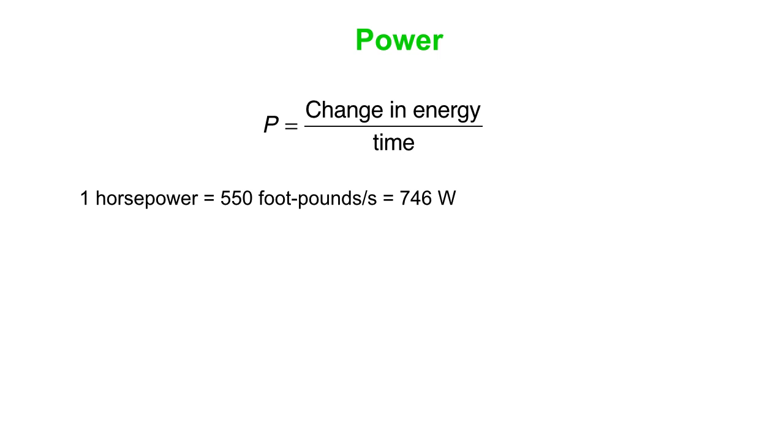Here's some different units. We tend to work in watts, but you've probably also heard about horsepower. One horsepower is 746 watts, and in the old English system it's 550 foot-pounds per second.